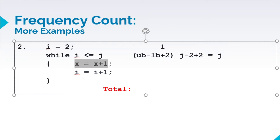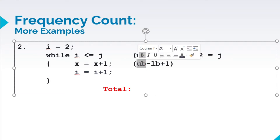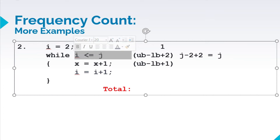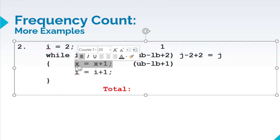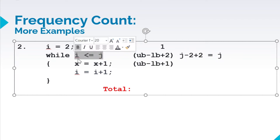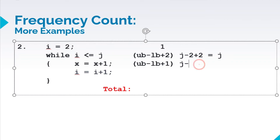Next, we have these statements inside this iterative statement. So therefore, we'll use the formula upper bound minus lower bound plus 1. The upper bound and lower bound are still taken from our condition in the while loop. So we'll have the upper bound which is j, minus lower bound i which is equal to 2, plus 1. So negative 2 plus 1, we have negative 1. So our answer here, we'll get our variable j minus 1.